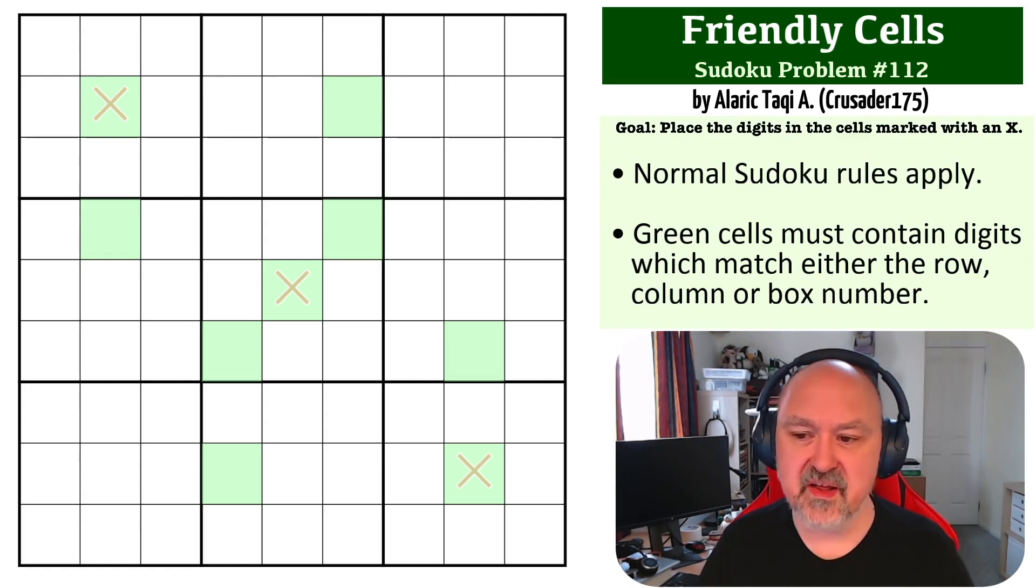So the way this one works is you have to place the digits into the cells marked with an X. This is Friendly Cells. The cells marked in green can only contain digits that match either the row, column, or box number. So this means that they are friendly.